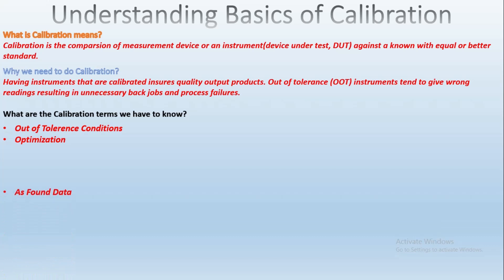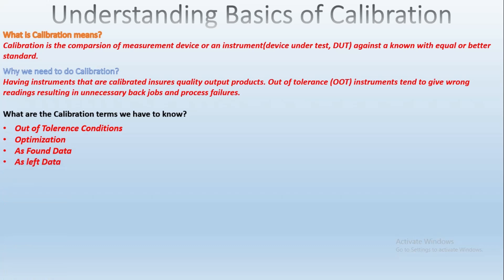The next term is as-found data — the reading of the instrument before it is adjusted is called as-found data. And as-left data is the reading of the instrument after adjustment, or the same as the as-found reading if no adjustment was made.